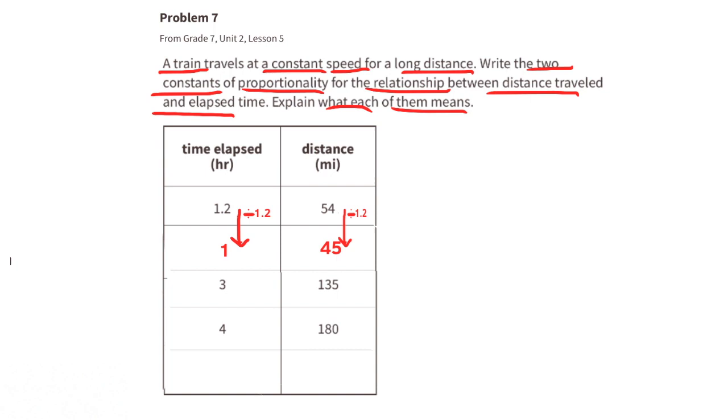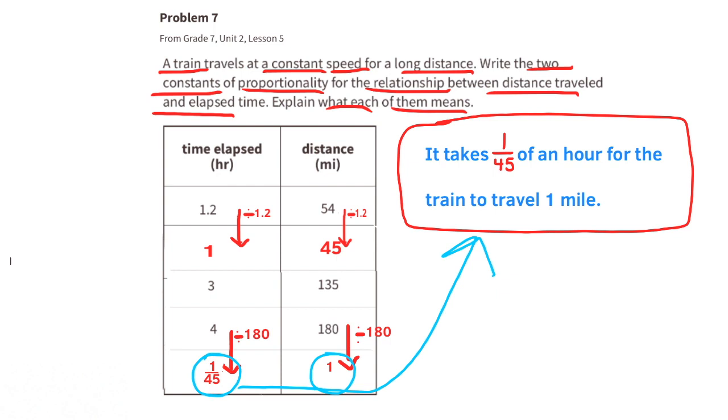To find the second constant of proportionality, we need just one mile. So let's take 180 and divide it by 180 to get one mile. Now we need to divide time elapsed by 180. 4 divided by 180 equals 1 over 45. This constant of proportionality is 1 to 1 over 45. This means that it takes 1 45th of an hour for the train to travel one mile.